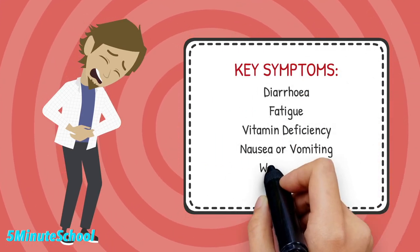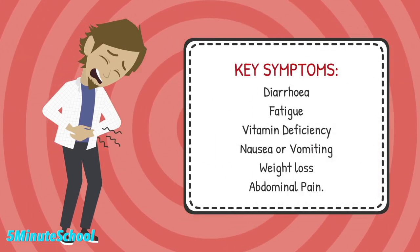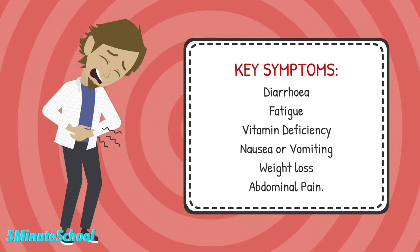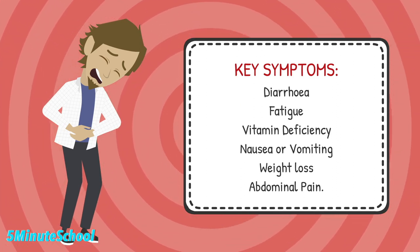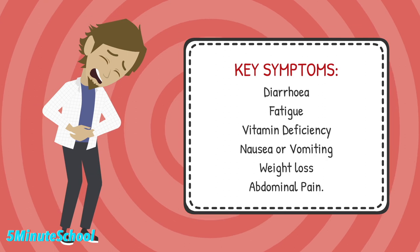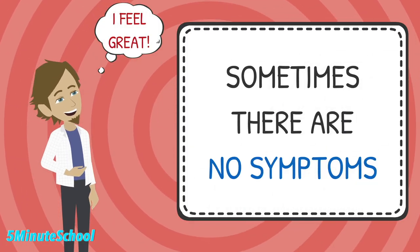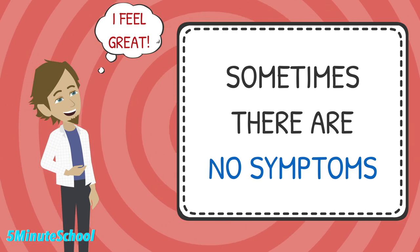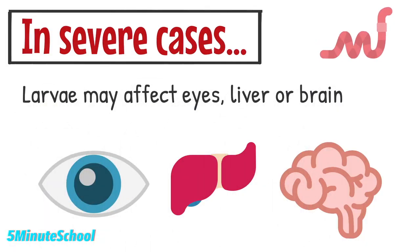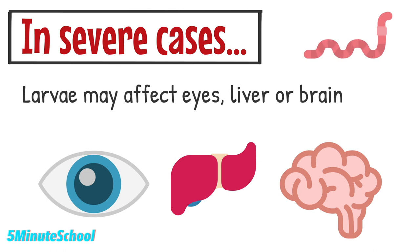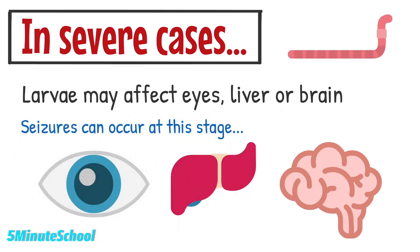Key symptoms when you have a tapeworm infection include weakness, diarrhoea, fatigue, vitamin deficiency, nausea or vomiting, weight loss, and abdominal pain. Sometimes a tapeworm infection can be present without any symptoms at all. In severe cases, some larvae — especially in cases of those which come from pigs — can move out of the intestines and damage other areas of the body like the eyes, liver, or brain. Patients at this stage may start developing seizures.